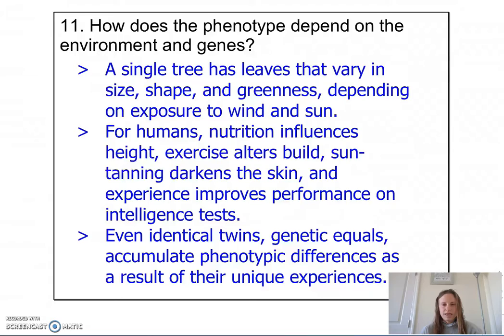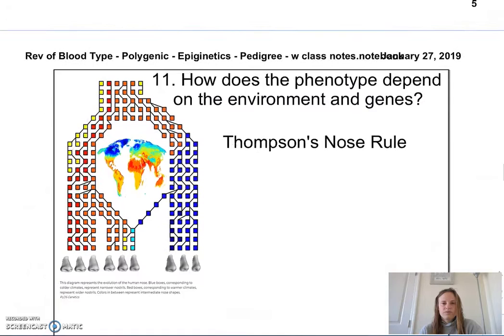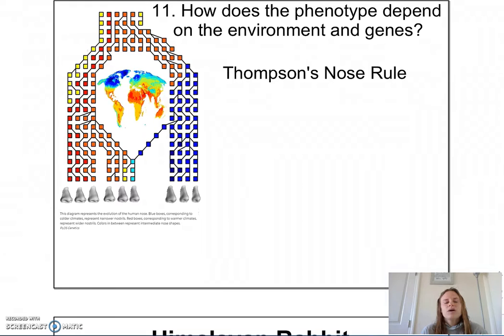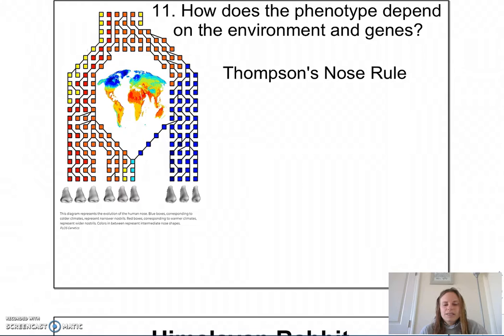There's something else called Thompson's Nose Rule, where Arthur Thompson, an anthropologist, hypothesized that nose shape is dependent on climate, since your nose is responsible for heating and humidifying the air. He hypothesized that in warmer climates you'll have a shorter and thicker nose, whereas in colder climates you tend to have a thinner and longer nose. His hypothesis was actually tested at Penn State and more evidence was gathered that Thompson's Nose Rule does hold water.